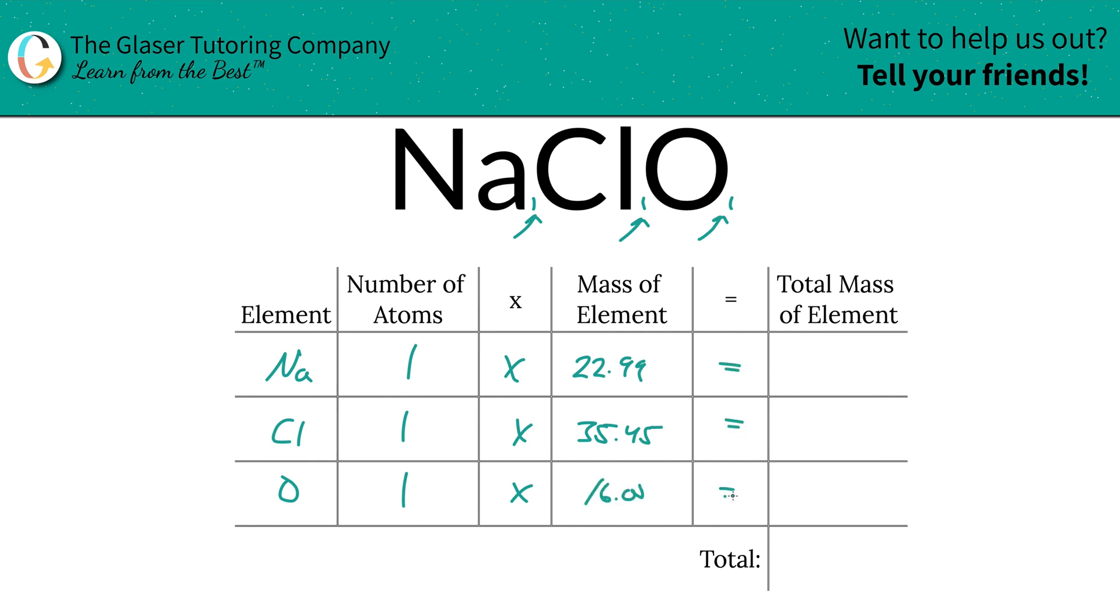Then you're going to multiply the rows across to find the total mass of the elements. The total mass of sodium here is going to be 22.99. Total mass of chlorine is going to be 35.45. Total mass of oxygen is going to be 16.